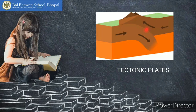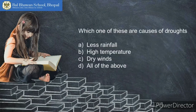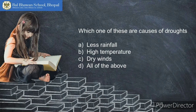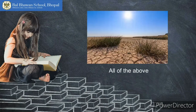Next question: Which one of these are causes of droughts — less rainfall, high temperature, dry winds, or all of the above? If you have seen the previous videos, it would be a piece of cake for you to answer. And the correct answer is all of the above. All of these factors, if they persist in an area for a longer period of time, cause droughts.